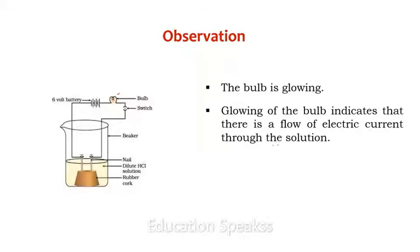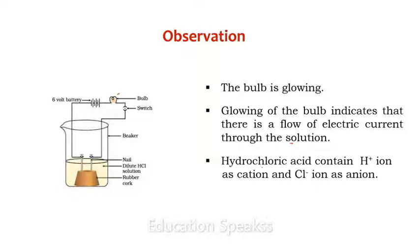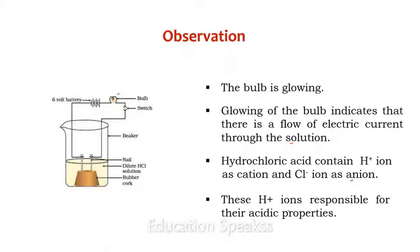The glowing of the bulb indicates that there is a flow of electric current through the solution. The question arises: why is there a flow of electric current through the solution? The answer is that hydrochloric acid contains hydrogen ion as the cation and chloride ion as the anion. Since the cation present in acids is hydrogen, this suggests that hydrochloric acid produces hydrogen ions, which are responsible for its acidic properties.